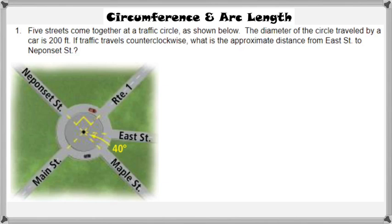Here is a word problem applying this concept to a real-world situation. Five streets come together at a traffic circle. The diameter of the circle traveled by a car is 200 feet. If traffic travels counterclockwise, what is the approximate distance from East Street to Nippon Street?